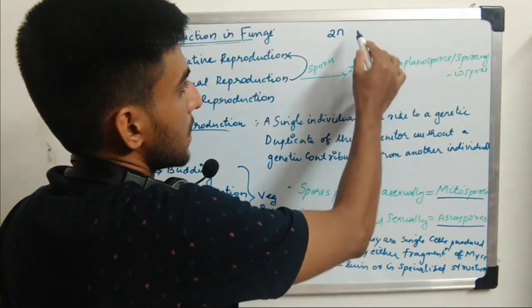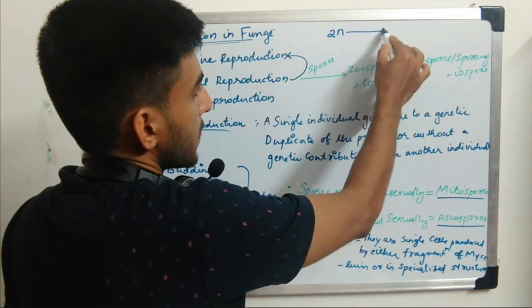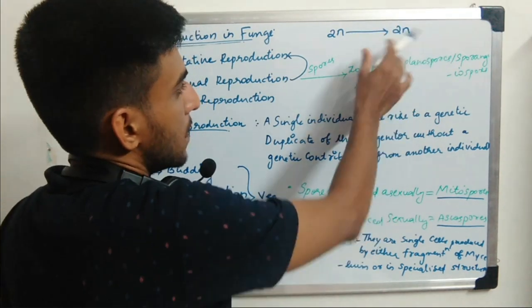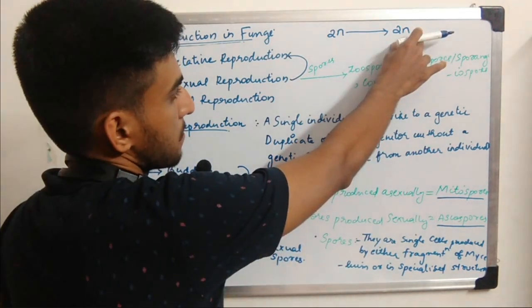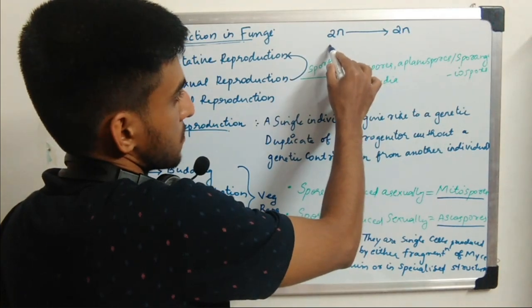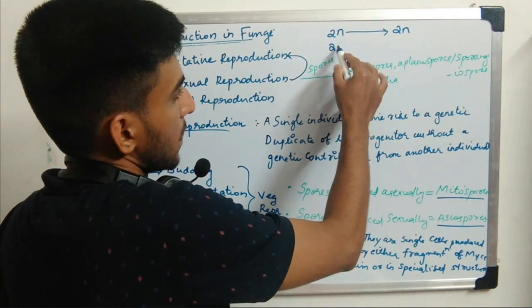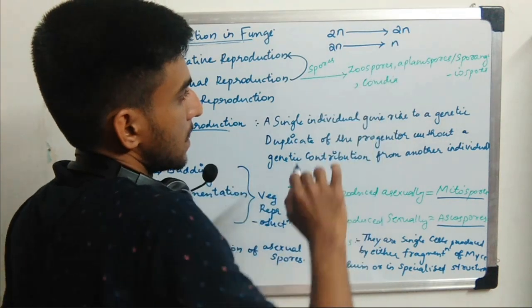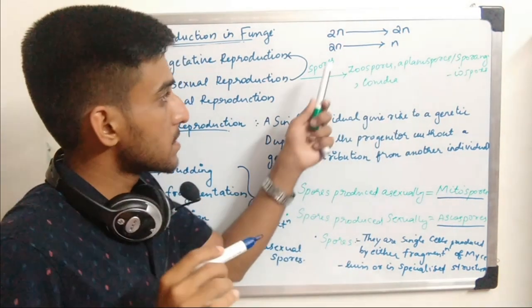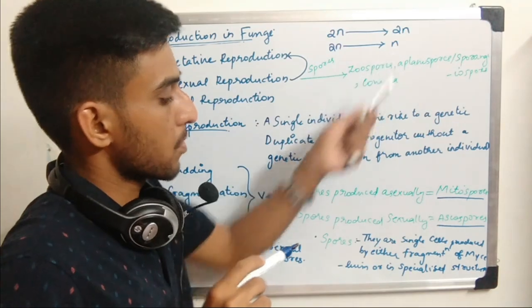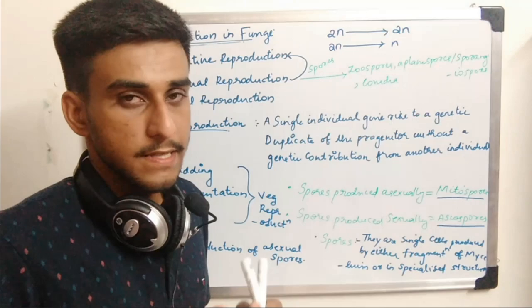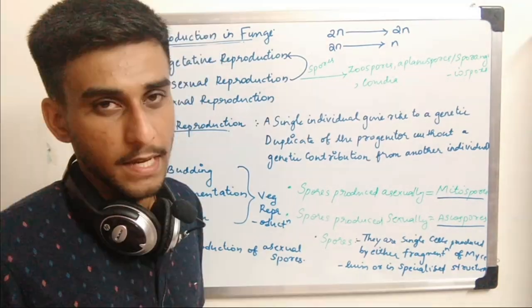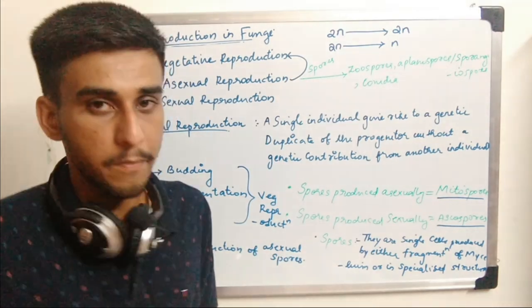Mitosis is a part of the cell division process. Meiosis is known as reductional division — a diploid cell after meiosis becomes haploid. The spores produced asexually are known as mitospores because they are produced mitotically, skipping meiosis.